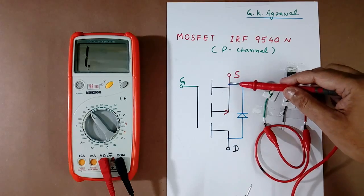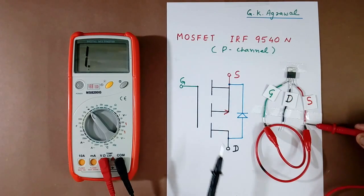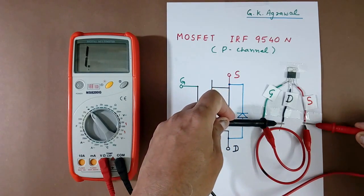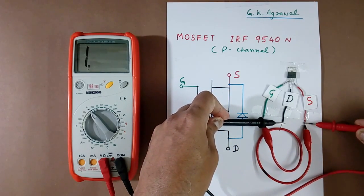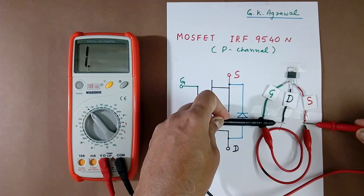Now MOSFET is in OFF condition. Now I will connect plus terminal at source and minus terminal at drain. This is drain, black color is drain, so I am touching here. See it is multimeter showing open. This means this MOSFET is OK under OFF condition.